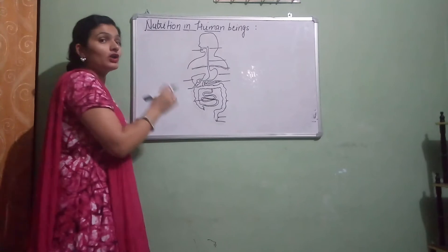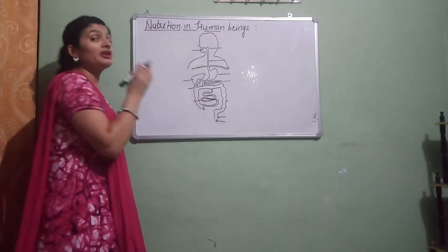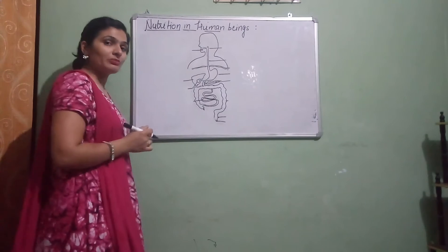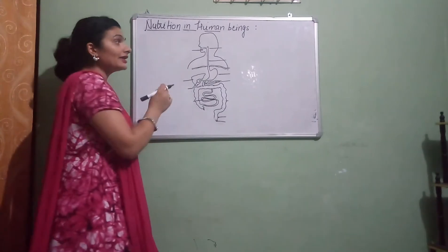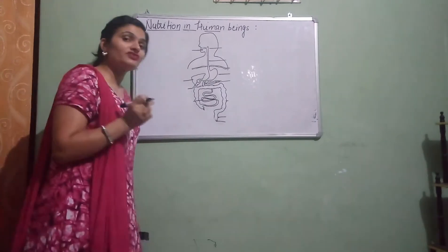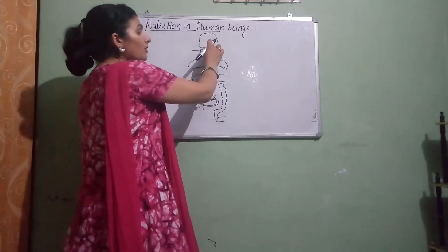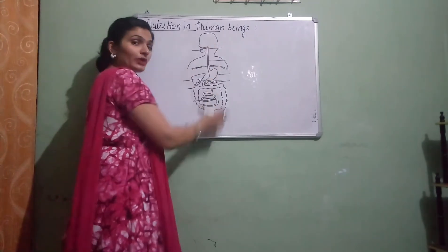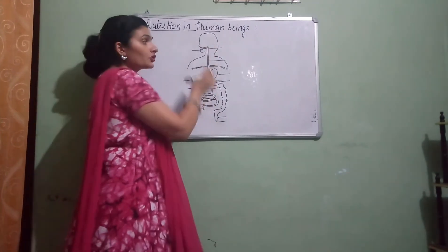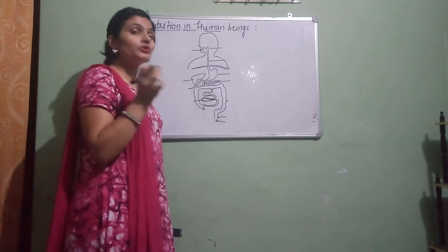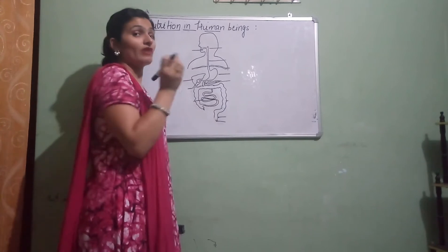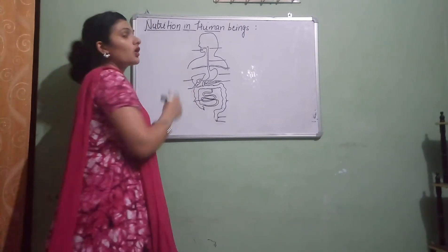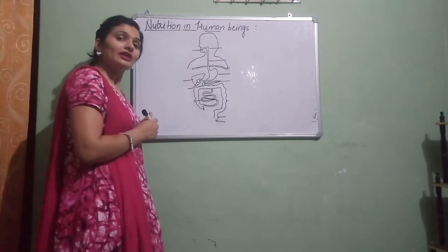First of all, we should know about the alimentary canal. This is the digestive system of human beings. Inside it, there is the alimentary canal that extends from mouth to anus — the long tube where absorption and digestion takes place. That is called the alimentary canal.